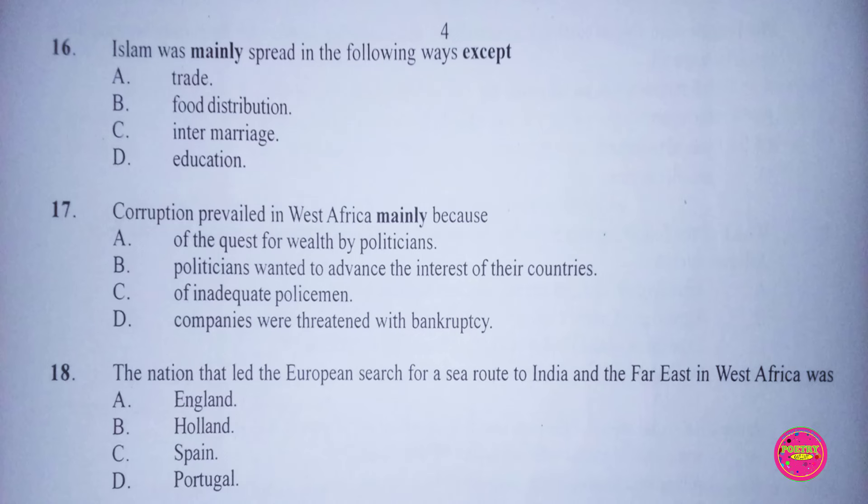Question 17. Corruption prevailed in West Africa mainly because of: A. The quest for wealth by politicians, B. Politicians wanted to advance the interests of their countries, C. Inadequate policemen, D. Companies were threatened with bankruptcy. The correct answer to this question is A. Because of the quest for wealth by politicians.